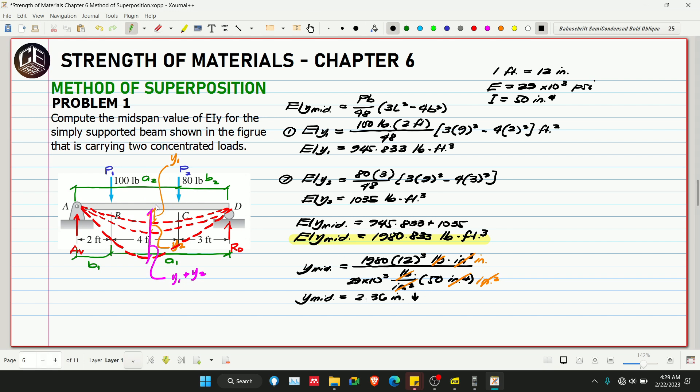These cancel, what remains is inch squared, this cancels leaving inch, the pounds cancel, what remains in our unit is inches. So 1980.833 multiplied by 12 cubed over 29,000 multiplied by 50. Our answer is 2.36 inches, and this is downward because that's the effect of 100 pounds and 80 pounds on our beam. But with double integration method, moment area theorem, and conjugate beam method, there's really a sign convention used. But here, we mostly get positive values because we're based on equations, so we should just know what the sign of our deflection will be.